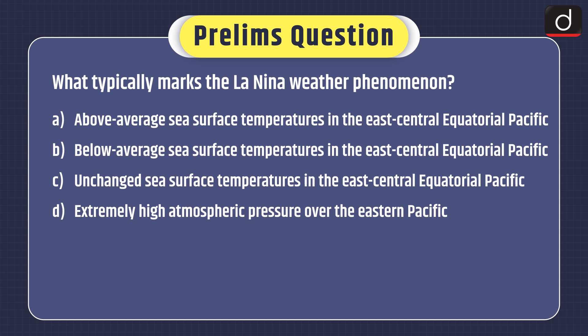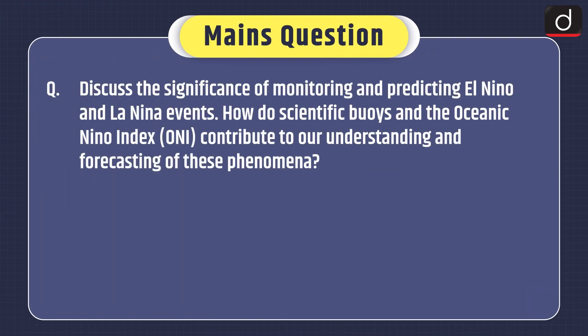Now it's time for the practice questions. First, a prelims-based question: What typically marks the La Niña weather phenomenon? (A) Above-average sea surface temperatures in the east-central equatorial Pacific, (B) below-average sea surface temperatures in the east-central equatorial Pacific, (C) unchanged sea surface temperatures in the east-central equatorial Pacific, or (D) extremely high atmospheric pressure over the eastern Pacific? You can send the answer in the comment section. And now for the mains practice question: Discuss the significance of monitoring and predicting El Niño and La Niña events. How do scientific buoys and the Oceanic Niño Index contribute to our understanding and forecasting of these phenomena?